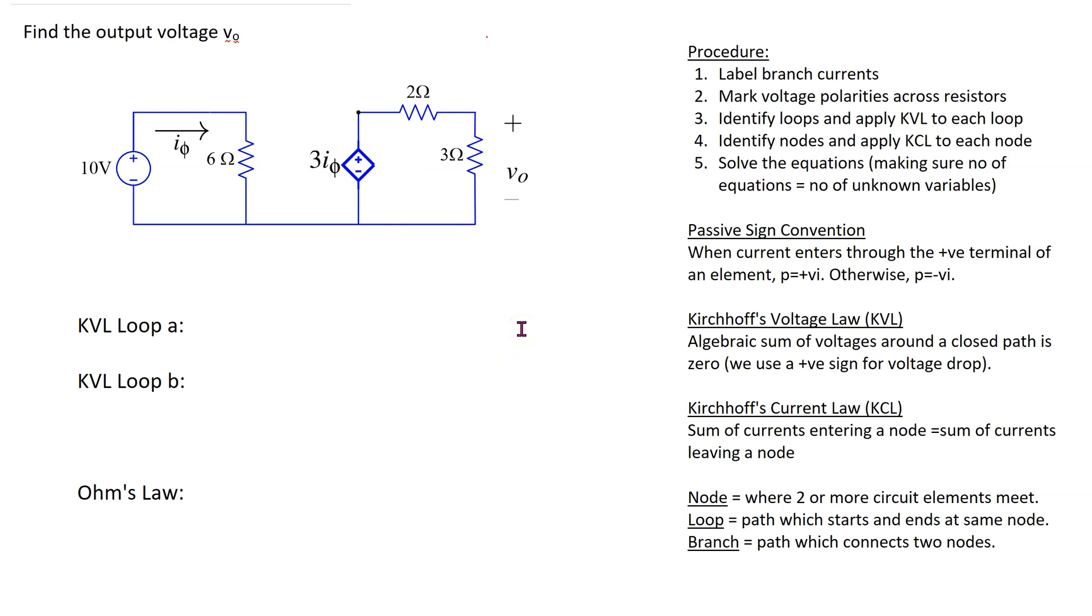In this example, we will look at how to solve circuits containing dependent sources. Consider the circuit shown here. This circuit has one independent voltage source and one dependent source. This dependent source has a plus-minus symbol inside, indicating that this is a dependent voltage source, and the magnitude of this dependent voltage source is in terms of a circuit current.